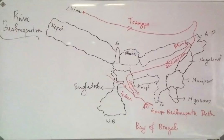In Bangladesh, the name of the river becomes Jamuna. It also joins the Ganga, which is called the Padma in Bangladesh. So the river is known as Jamuna in Bangladesh.